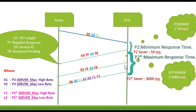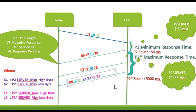The ECU tries to process it within 5000 milliseconds. Here you can see that within 5000 milliseconds the server didn't process it initially, so the tester got NRC 78, but somehow within that time the tester got a positive response. So the maximum P2 star server time is 5000 milliseconds — within 5 seconds, somehow the tester got a positive response. Now what will happen if it is extended more than 5 seconds? Let's see the next slide.